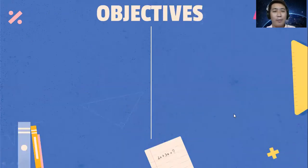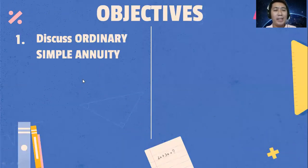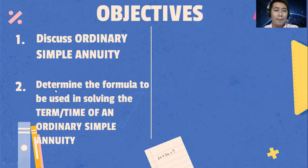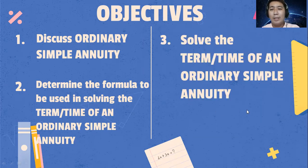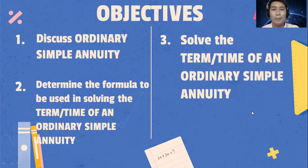What are the objectives of this lesson? We are going to discuss ordinary simple annuity, then determine the formula to be used in solving the term or time of an ordinary simple annuity, and then solve the term or time of an ordinary simple annuity.